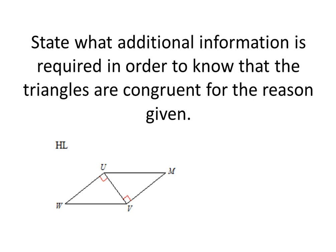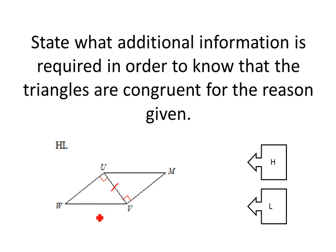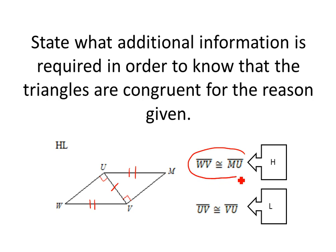Now we have hypotenuse-leg, which is the final example in this video. We need a hypotenuse and a leg. We have a right triangle, so that gives us the right angle. Then we have the shared middle side: UV is congruent to VU because it's the same side — that's the leg. So now we need the hypotenuse: WV from the first triangle and UM from the second triangle. That would be the additional information you would need, and that is all there is to doing these problems.